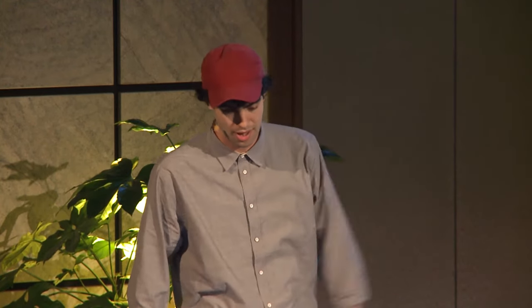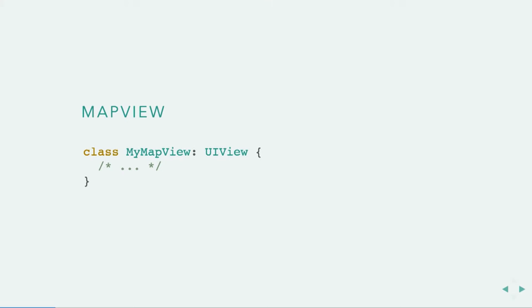And even if we have a custom view, like this middle thing here, we can still live because we can just subclass UIView ourselves from outside of UIKit. And that's kind of amazing when you think about it. So we can use these views and build our product for iOS.